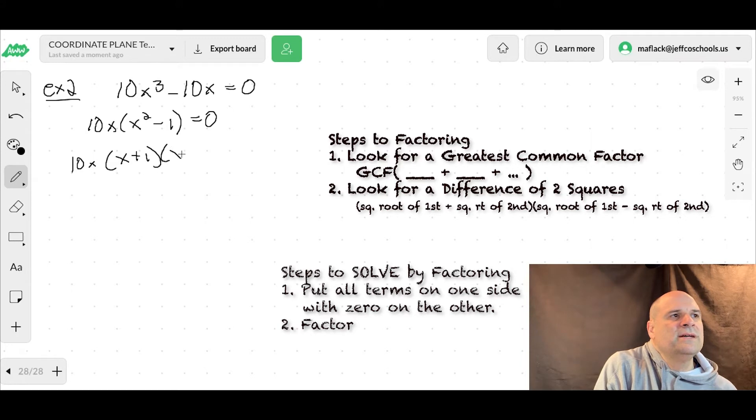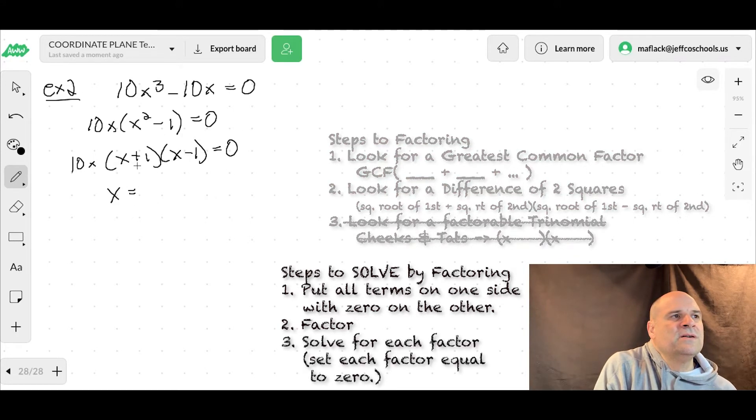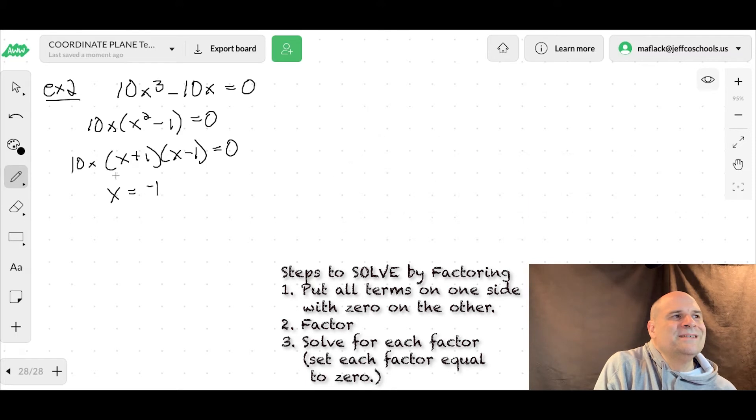All right. That's a beautiful difference of two squares. So let's factor it. x plus 1, x minus 1 equals 0. So our x values are negative 1, 0, because that's what will make this factor 0, and then positive 1.